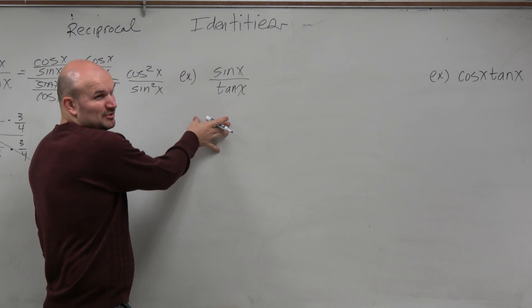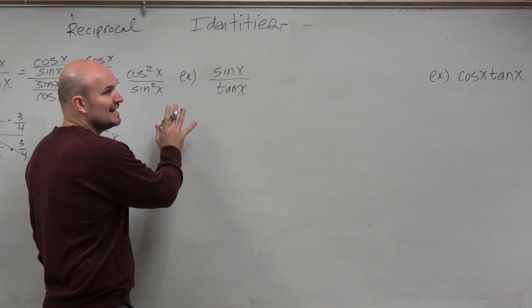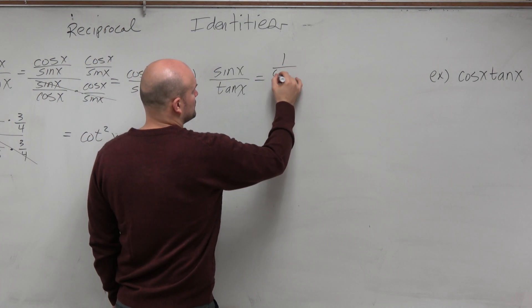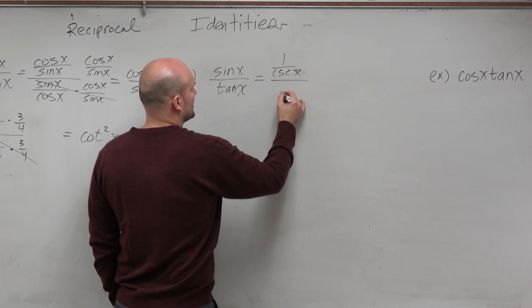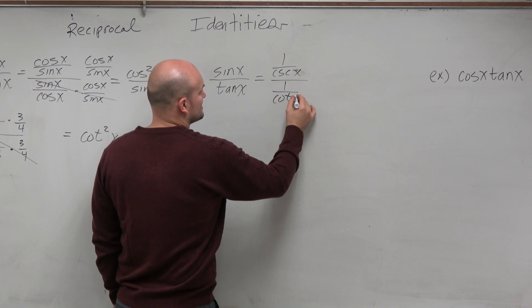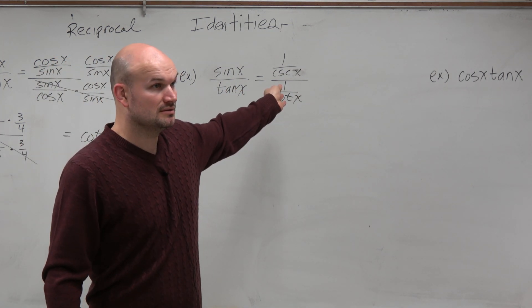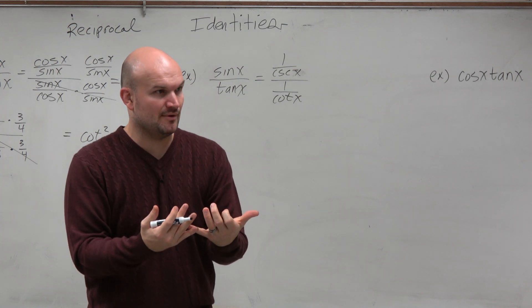So why don't I? Now, here's where a lot of people get confused. A lot of people always want to apply identities. So some people will be like, well, then I can rewrite this as 1 over cosecant of x over 1 over cotangent of x. Now, does that work? Is that correct? Yes. But did that help me simplify this in any way?